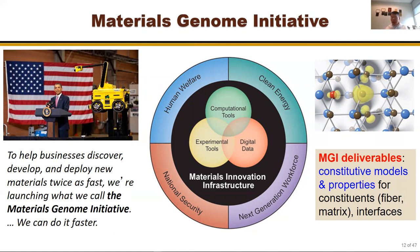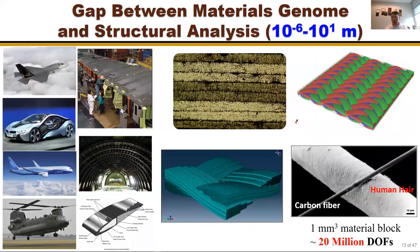The deliverables are constitutive models and properties for constituents — for composites, that means fibers, matrix, and interfaces. But if we're dealing with a composite structure, the system could be meters in size while the fiber reinforcement is in microns — smaller than a human hair. To make an airplane from such material represents at least six orders of magnitude in scale.